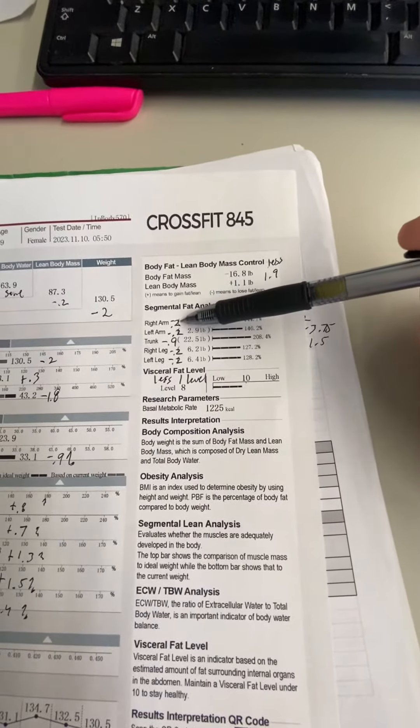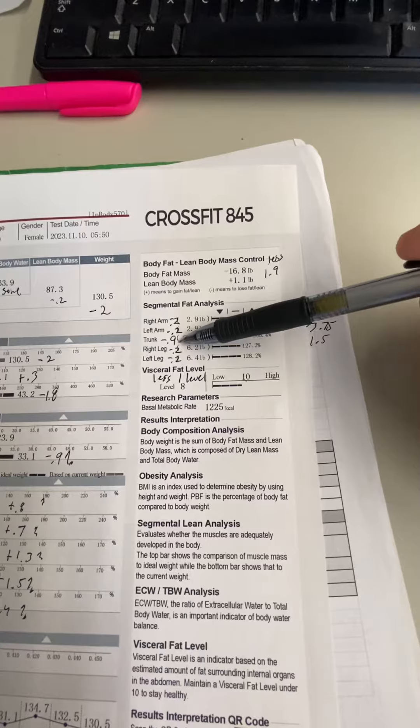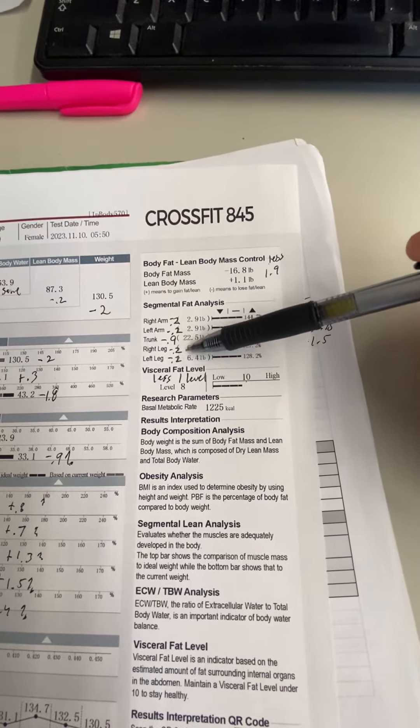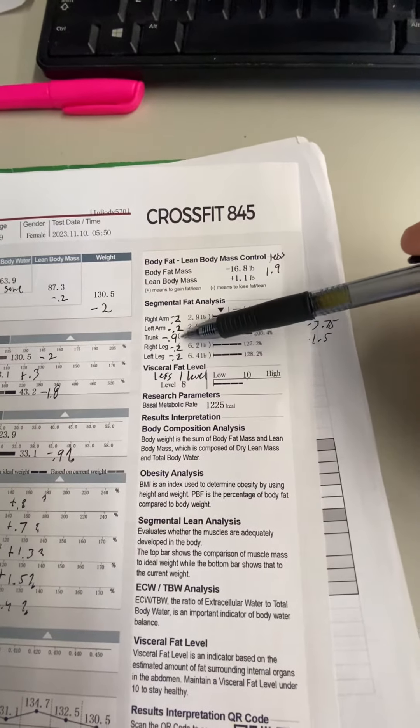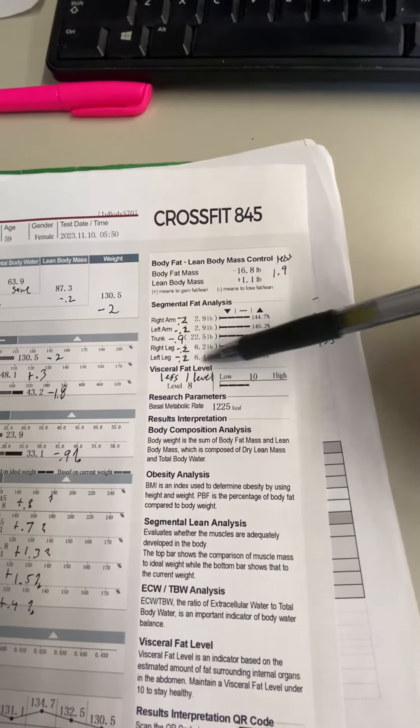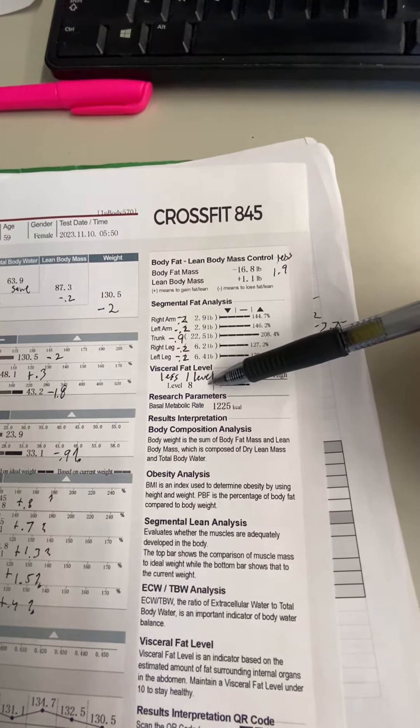Where did you lose the body fat from? 0.2 pounds off of your arms and legs each, and then almost one full pound off your trunk. And then your visceral fat levels went down another level, which is great.